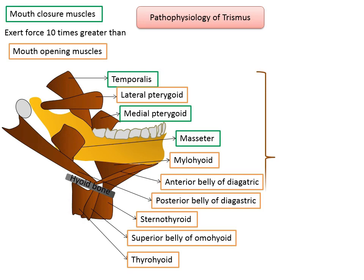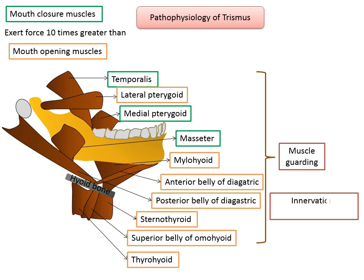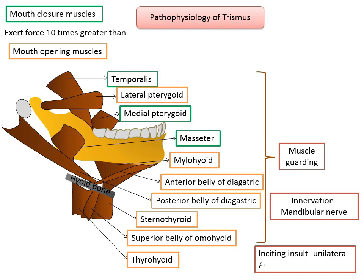Innervation for the majority of these muscles is provided by the mandibular division of the fifth cranial nerve. The muscle groups that control jaw opening and closure act in antagonism, as neurogenic stimulation of one group causes reflex neural inhibition of the other. While the inciting insult may be unilateral, the reflex activated is bilateral. Each of these muscles plays an important role in mastication, and when damaged, each can cause limitations in opening.